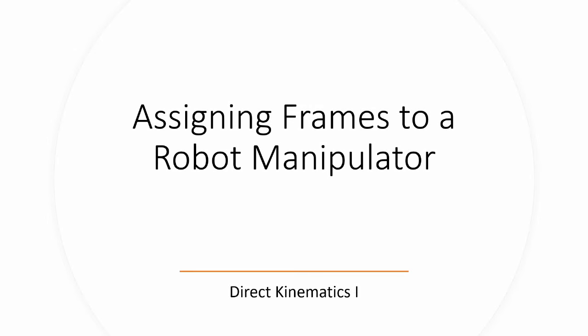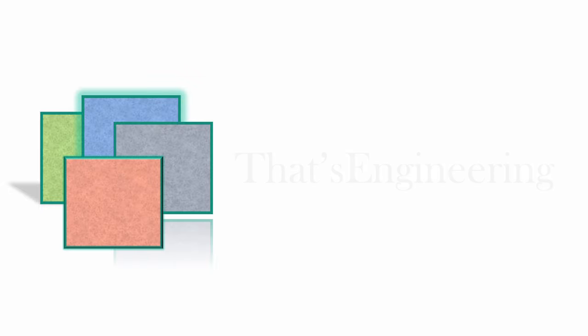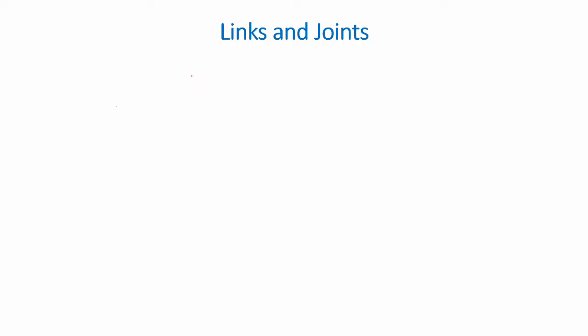Hi everyone. In this video, which is part one of the direct kinematics section on robotics, we will be looking at how to assign frames to a robot manipulator. This is an important concept in robotics, as we have to be able to describe how a particular part of the robot is oriented with respect to any other part or object in the system. If you aren't familiar with frames, check out my previous video on spatial descriptions and transformations.